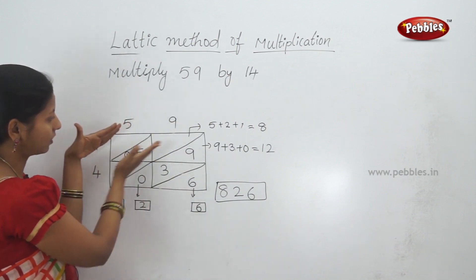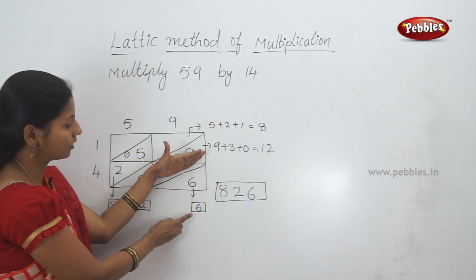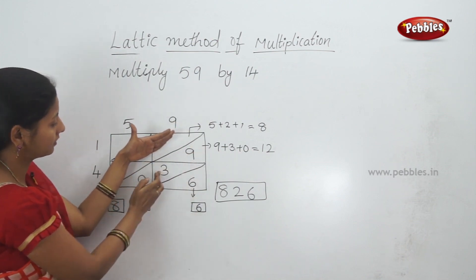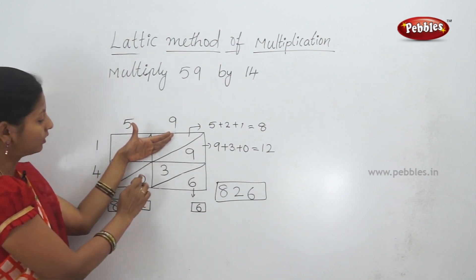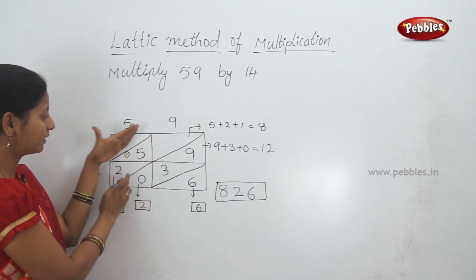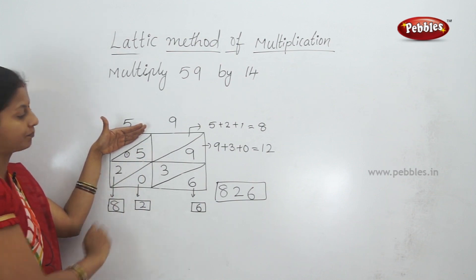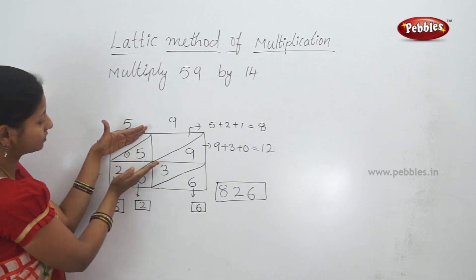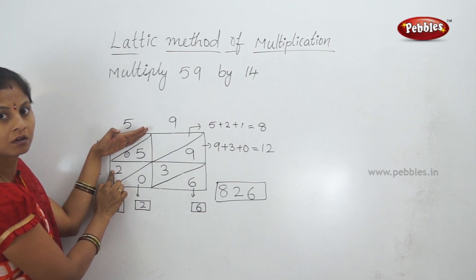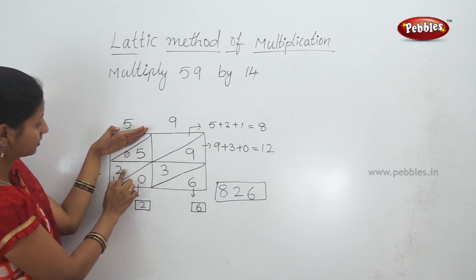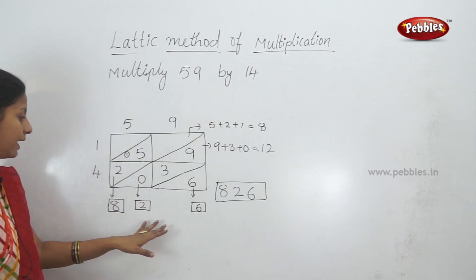Now the answer is clear. We need slanting diagonal lines in the corners. The first slanting line has the number 6. Next, these numbers 9, 3, and 0 are in the middle between the two lines. 9 plus 3 plus 0 equals 12 — a 2-digit number, so we write 2 here and carry forward 1. Next, 5 plus 1 plus 2: 5 plus 1 is 6, 6 plus 2 is 8. So the number is 8. Thus 59 times 14 equals 826.